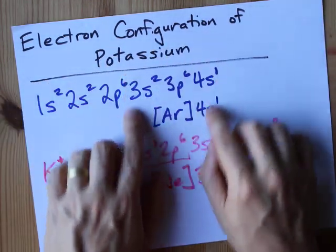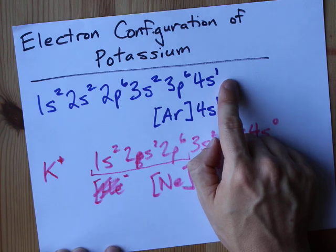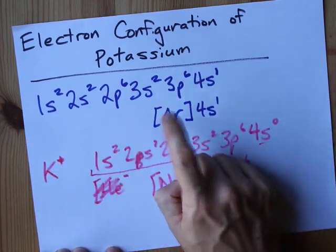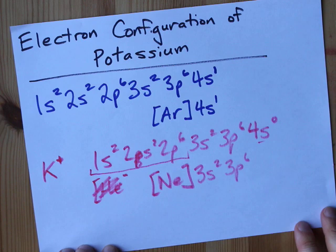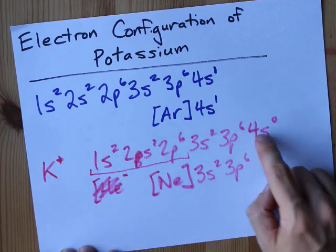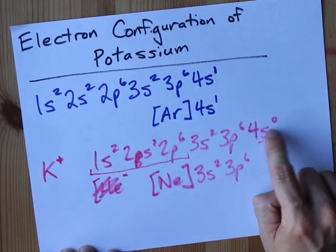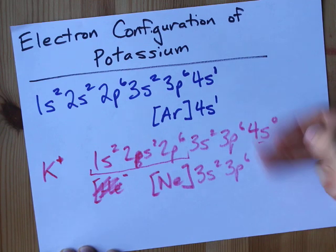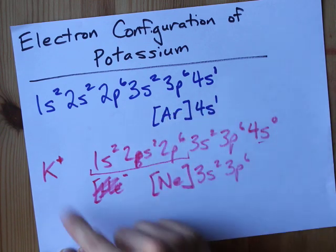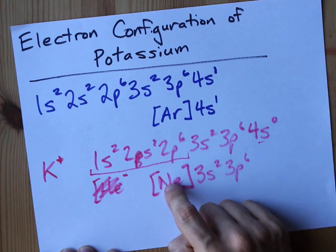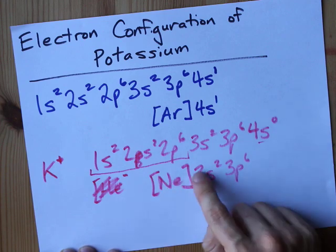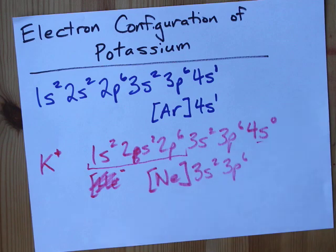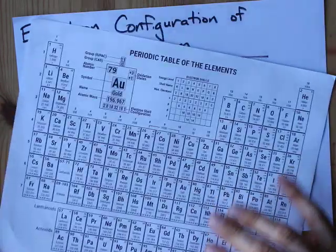Electron configuration for potassium ends with 4s1. You either have to write out everything that came before it, or use the noble gas configuration. If you take away an electron, you take it out of the 4s — make it 4s0, or just chop that off entirely. If you need the shorthand for K plus, you've got to go all the way back to neon, then list 3s2, 3p6. Beautiful! Four questions in one right here. Best of luck.